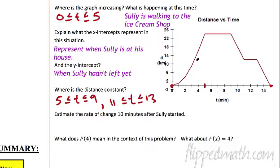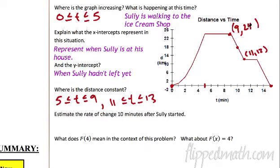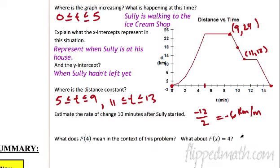Estimate the rate of change 10 minutes after Sully started. 10 minutes — this spot right here, and we have to estimate it. I'm going to get a point right here: this is the point (9, 24). We're approximating. And then it goes down to this point right here — that looks like (11, 12). So now we can estimate his rate of change. He's going to go down 12: going from 24 to 12, so he's going down 12 over how many? Two. So that is negative six — he's going six kilometers per minute. That's actually pretty fast. What is he in, an airplane or something? Who thought this problem up? This is ridiculous.